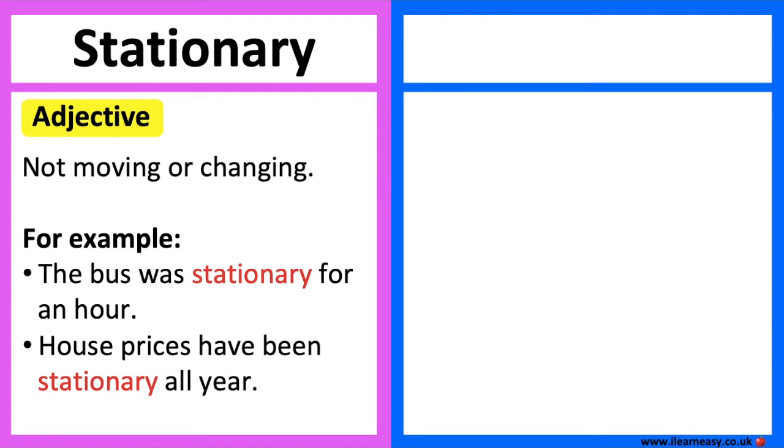House prices have been stationary all year. So this means that house prices haven't changed all year.